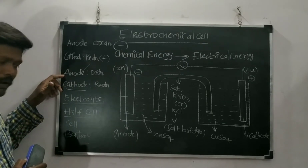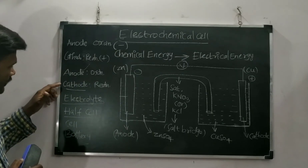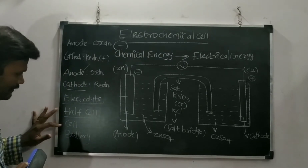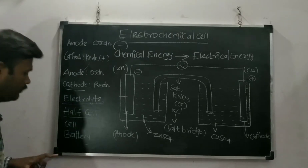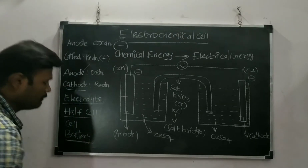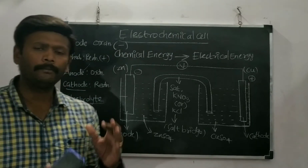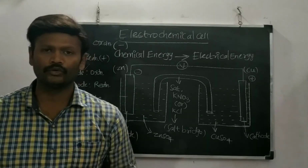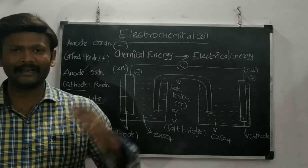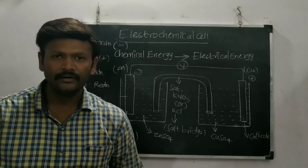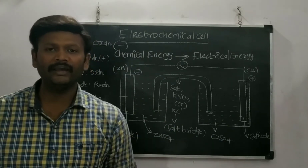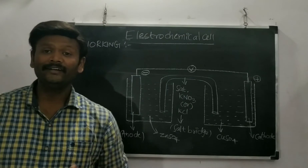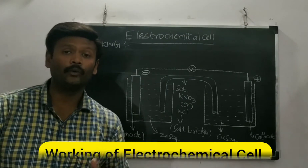Now you know the concept of anode, cathode, electrolyte, half cell, and cell. What is a battery? A battery is nothing but a number of anodes and cathodes interconnected in a series manner.